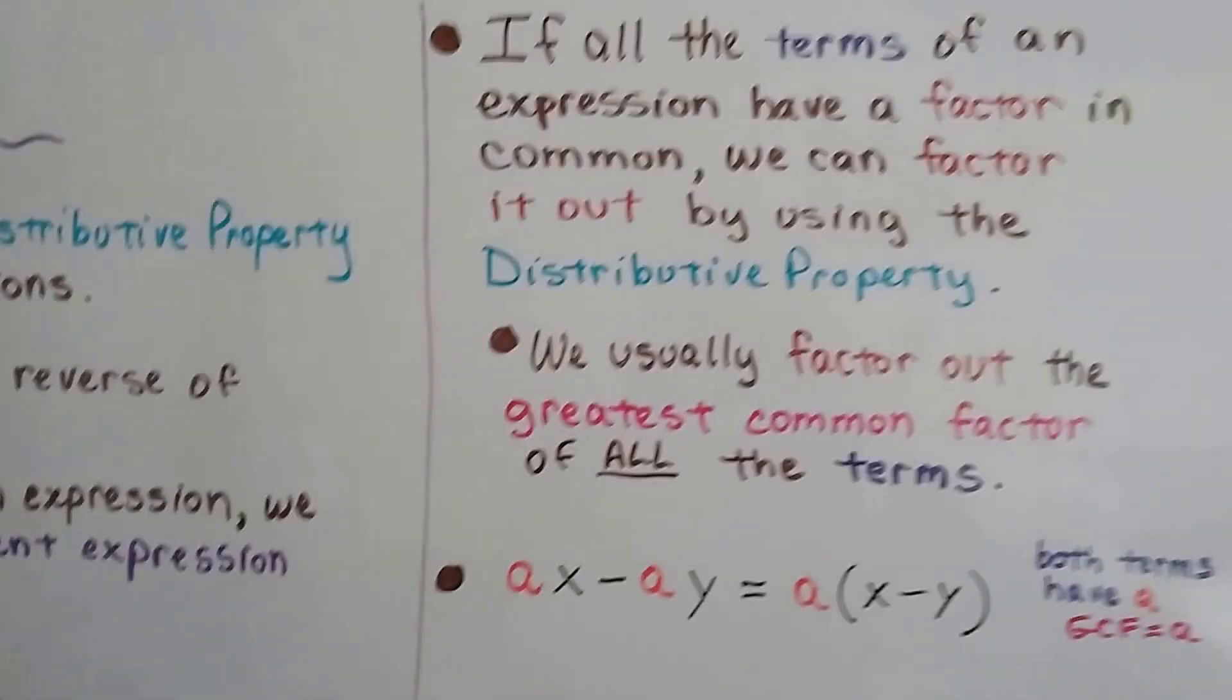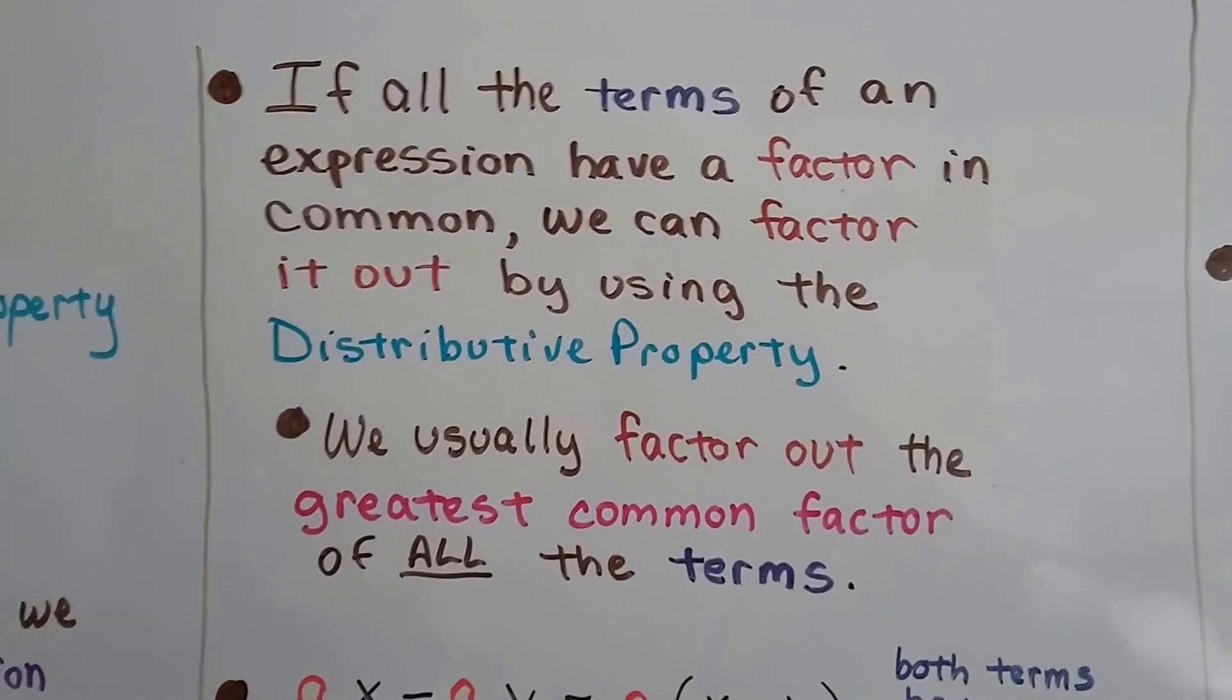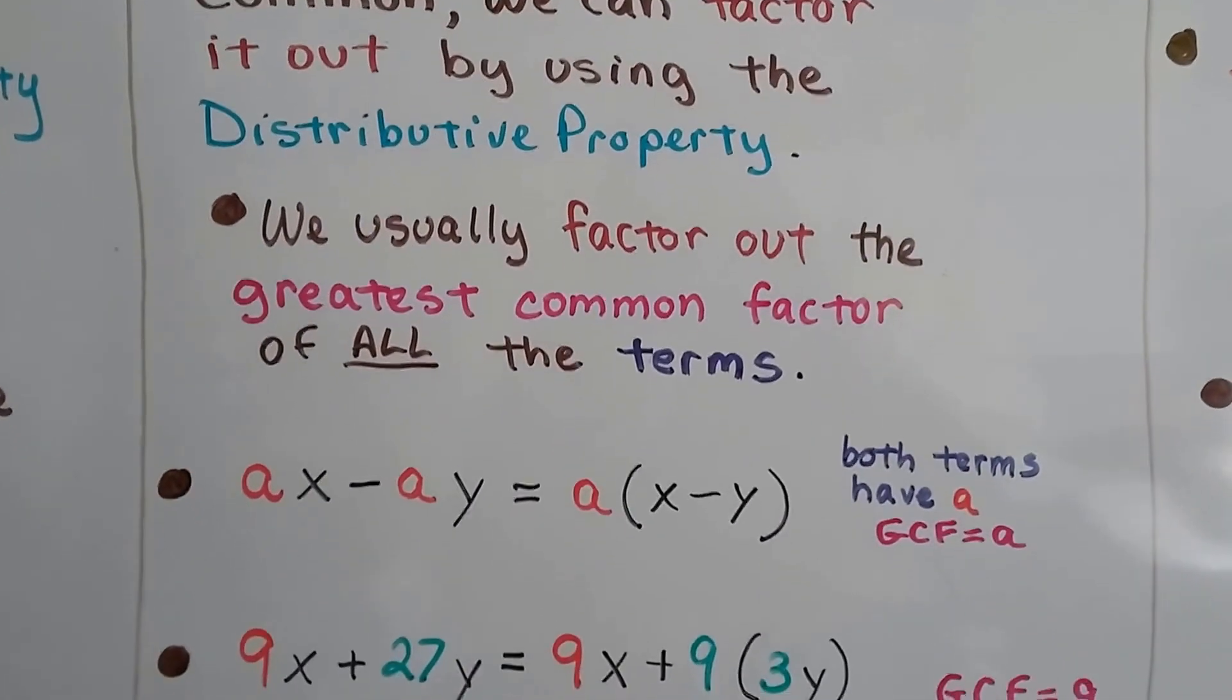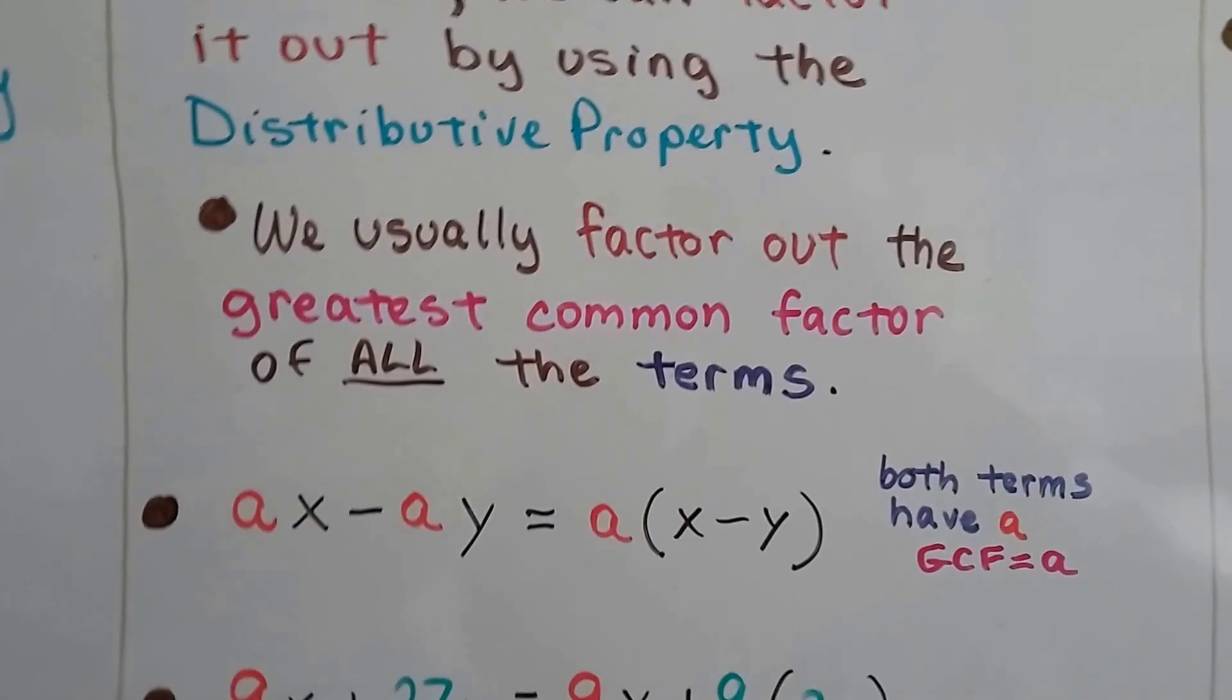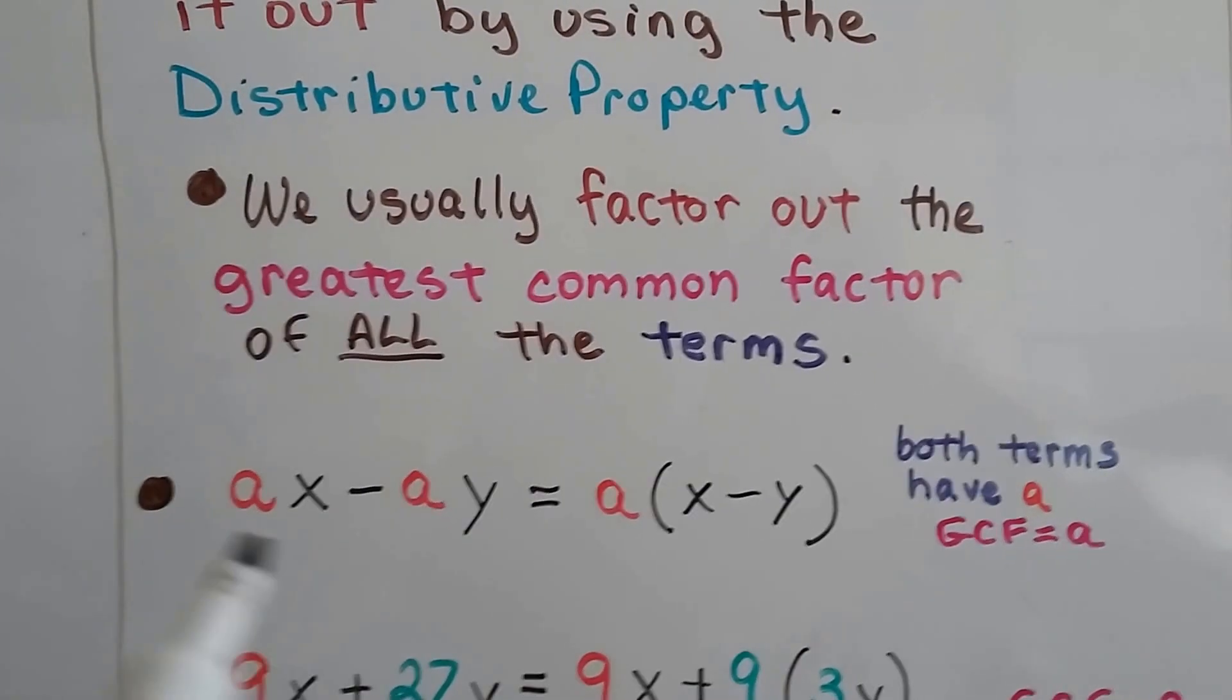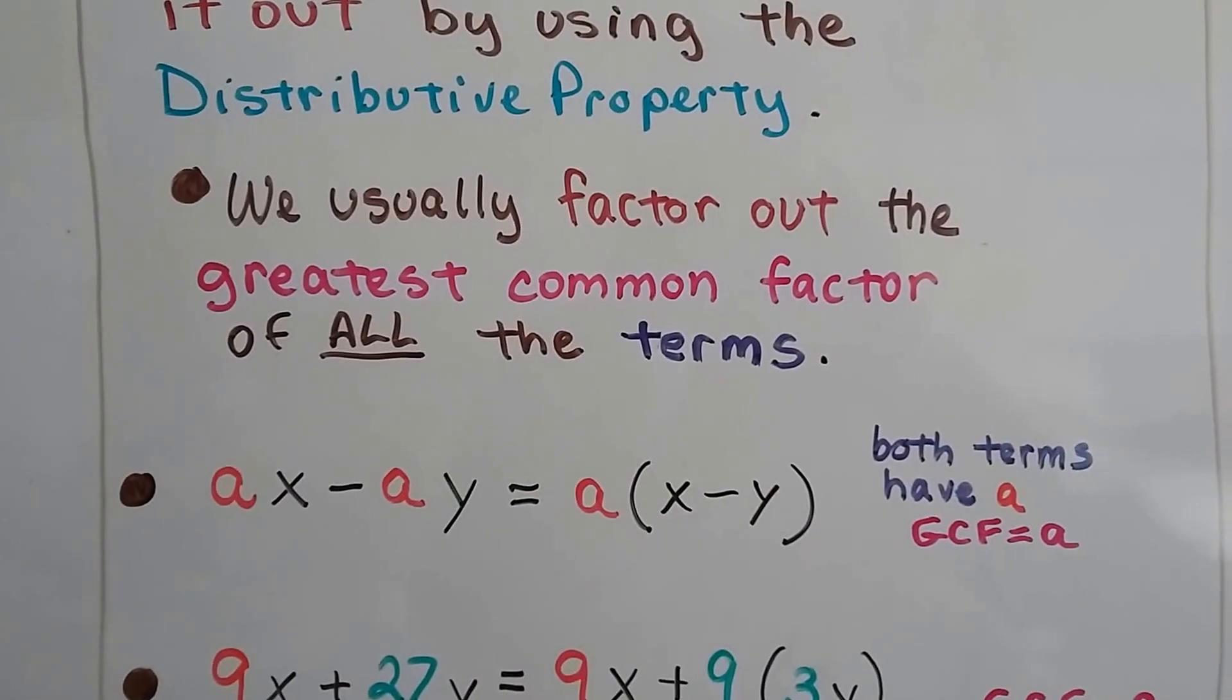If all the terms of an expression have a factor in common, we can factor it out by using the distributive property. We usually factor out the greatest common factor of all the terms. For a times x minus a times y, because both terms have an a, we can factor it out. That's the greatest common factor. So we end up with a times x minus y.